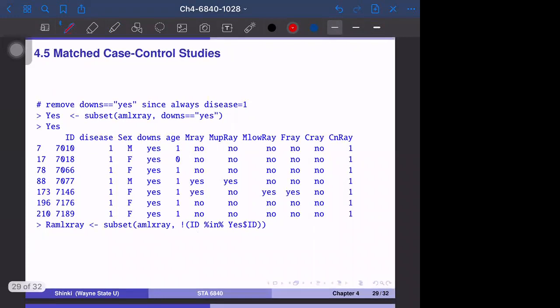We have to remove one variable, Down syndrome, because when Down syndrome is present, the disease is always one. The Down syndrome individuals have 100% probability to have this disease in this dataset, which makes the coefficient for Down syndrome infinitely large.